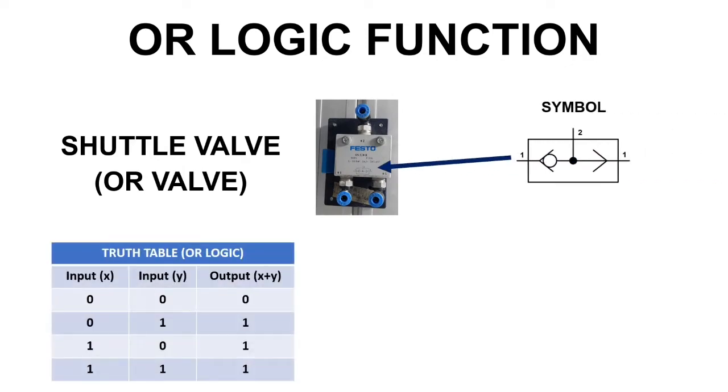Using a truth table, we will be able to know how an OR logic function is operated. Let's assume that input X is our first input signal and input Y is our second input signal. Also, output X plus Y is our output signal.